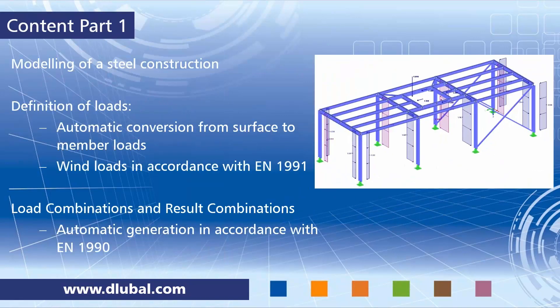We will model a steel construction today. On the right-hand side you see the picture — this is our goal, a simple construction that we are going to design. We will define self-weight, imposed loads, and wind loads using load generators, defining area loads that are automatically converted into member loads. We will use a generator to create wind loads in accordance with Eurocode 1, and finally combine these loads — creating load combinations and result combinations automatically in accordance with Eurocode 0.